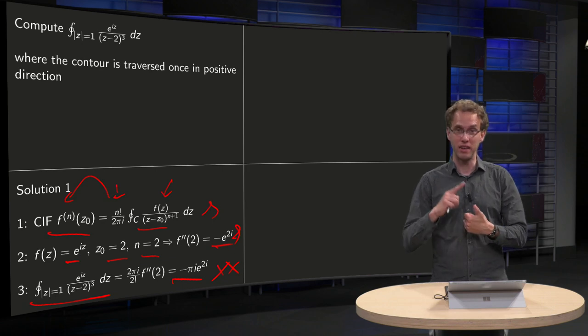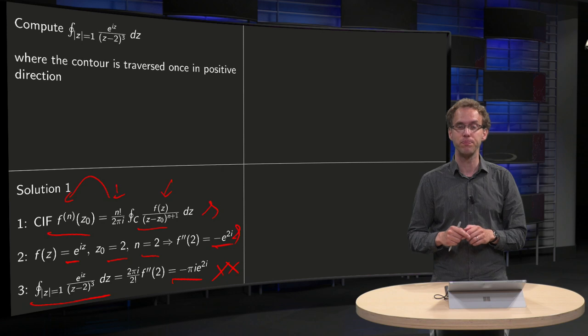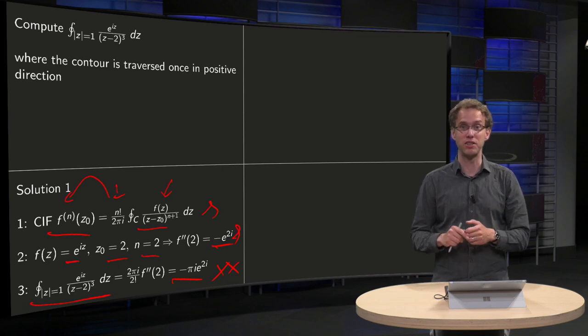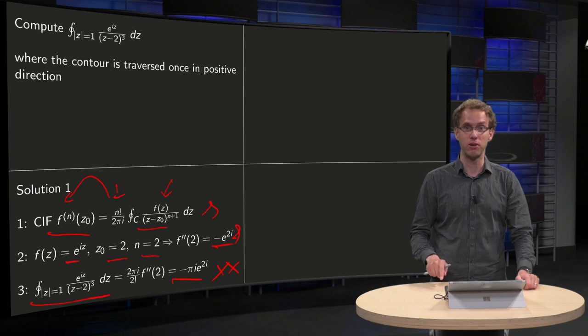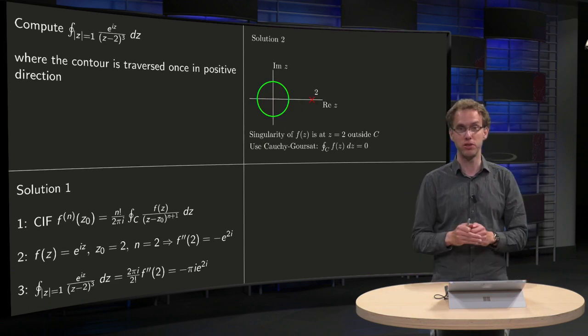The conditions are that f(z) should be analytic on and inside C, that's okay. C is simple and closed, that's fine as well, but also z0 should be inside C, and that's not the case. So you cannot apply Cauchy's integral formula like that over here, because your z0 is not inside C.